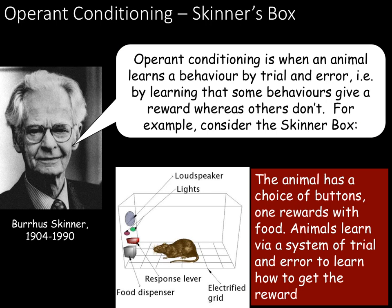The second form of conditioning is operant conditioning, often attributed to B.F. Skinner and the Skinner's box. Operant conditioning is when an animal learns a behaviour by trial and error — it learns that some behaviours give a reward whereas others don't. The animal is learning actively to associate an action with a reward or a punishment. This is common in humans where children are rewarded or punished for specific behaviour. In Skinner's experiment, rats and pigeons were trained to obtain a food reward using a small cage called the Skinner's box, where the animal has a choice of buttons, one of which rewards them with food.